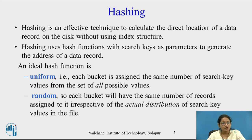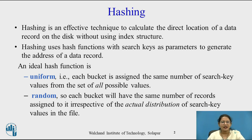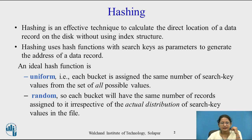An ideal hash function is uniform and random. Uniform means each bucket is assigned the same number of search key values from the set of all possible values. Random means each bucket will have the same number of records assigned to it irrespective of actual distribution of search key values in the file. So uniform and random are the two characteristics of an ideal hash function.